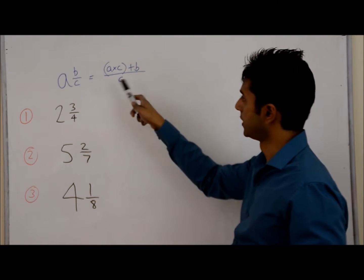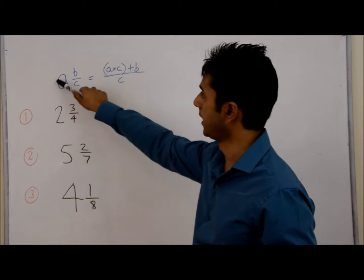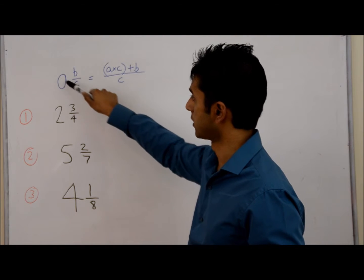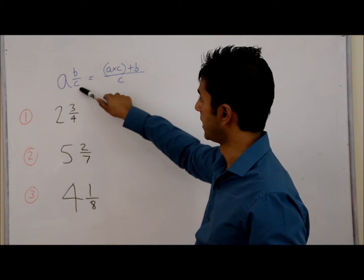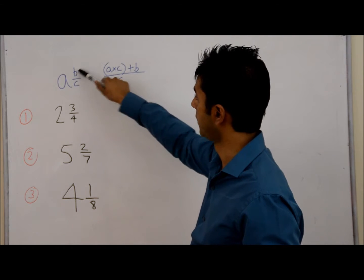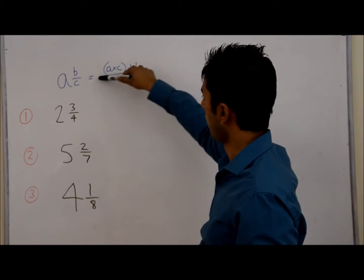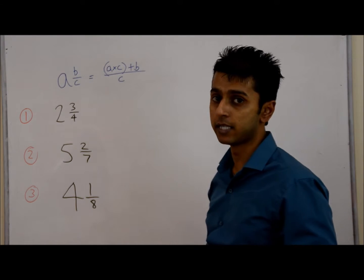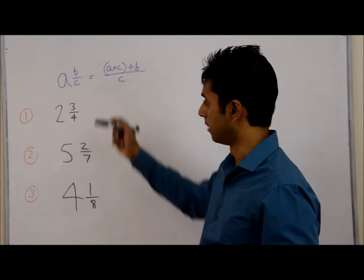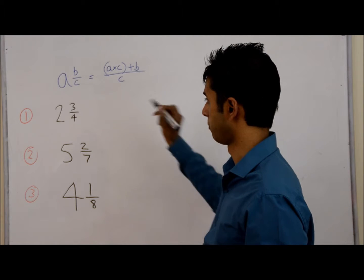The way you convert this into an improper fraction is you do A times C — that's the whole number times the denominator — and then you add the numerator B, and write it as a fraction over C. Let me show you a few examples so you understand this properly.